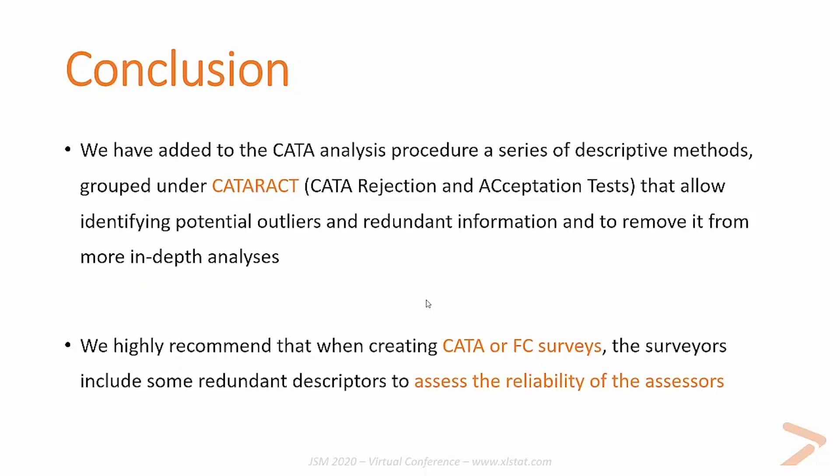As a conclusion, we have added to the CATA analysis procedure a series of descriptive methods and tests grouped under CATARACT that allow identifying potential outliers and redundant information, and removing it from more in-depth analysis to make the latter more relevant. We highly recommend that when creating CATA or force choice surveys, surveyors include some redundant descriptors to assess the reliability of the assessors.